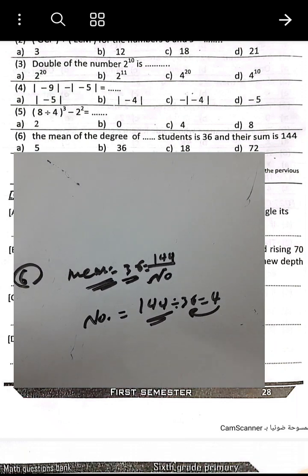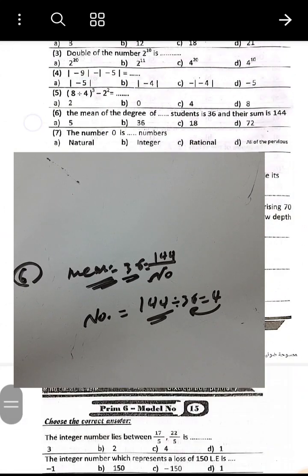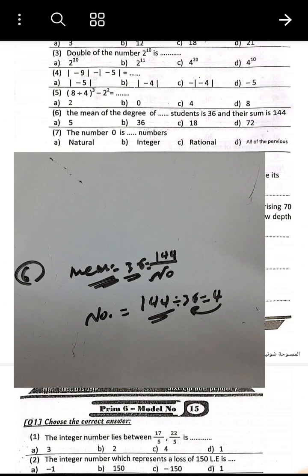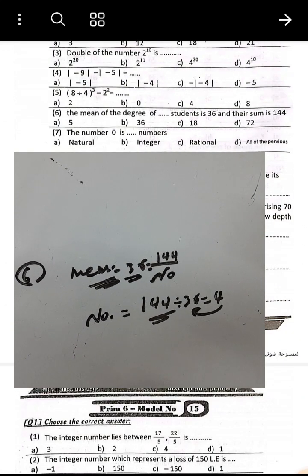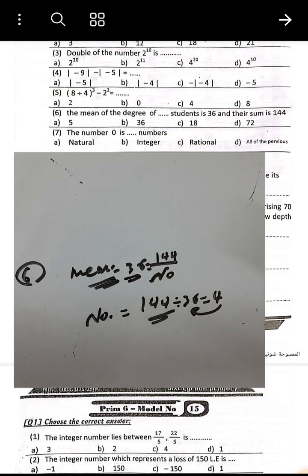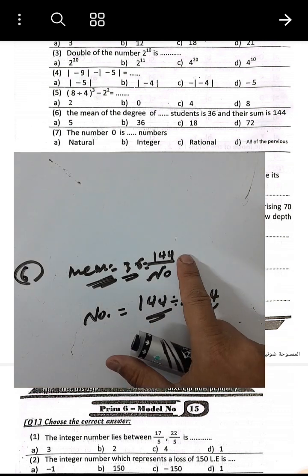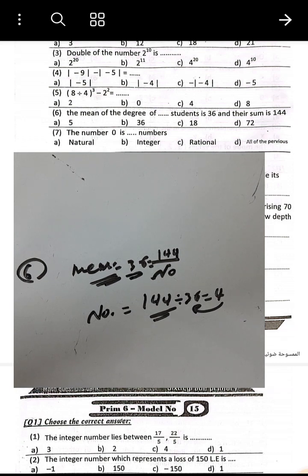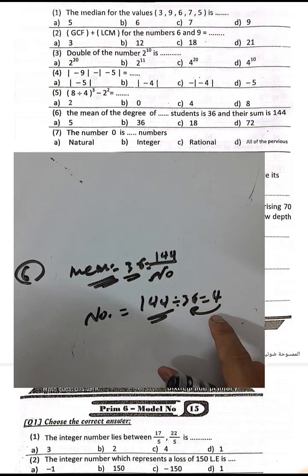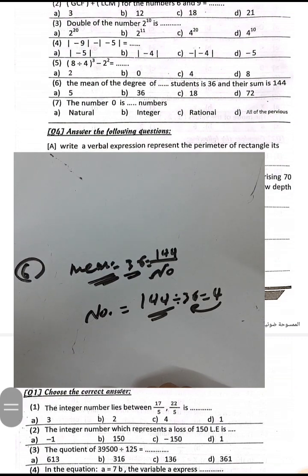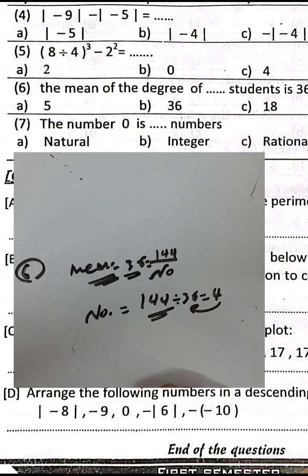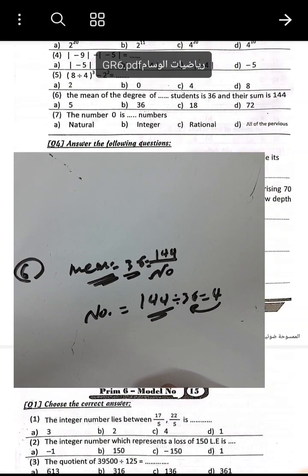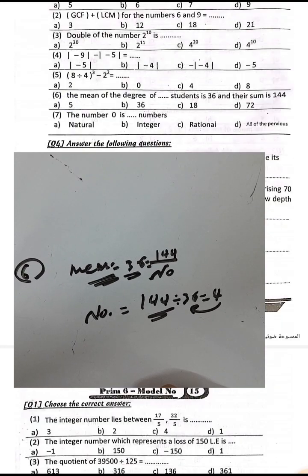The answer is false — you must change this to 4. The mean of the degrees of 4 students is 36 and their sum is 144. The number of students is 4. Replace the digit and write 4.